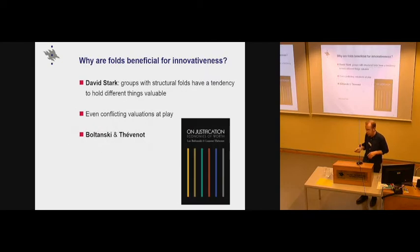Well, why would that be beneficial for innovativeness? Well, Stark thinks that such groups that have these folds, they have a tendency to have or hold different things valuable. They value different sorts of things. And here is where he relies on this semi-famous book by Luke Boltanski and Laurent Thevenot on justification, which was originally published in French already in the 1990s, but has only gained momentum in the English-speaking world in recent years, I think, or recent decade or so.